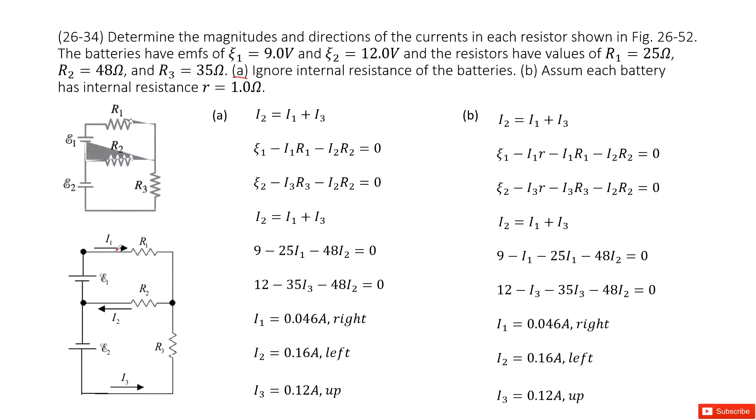We assume the current goes through R1 is I1 going to the right, and the current goes through R2 is I2 pointing to left, and the current goes through R3 is I3 going up. Now we can see.